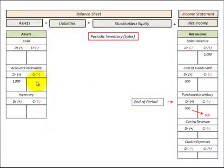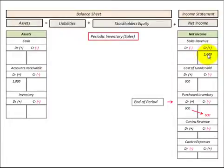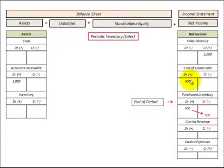The sales would be made the same way on account. We'd increase accounts receivable by $1,000 and increase sales revenue by $1,000. The cost of goods sold for those purchased inventories for the period would, in this case, be $600, and that would be the expense for the sales revenue.